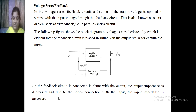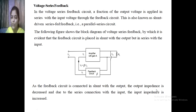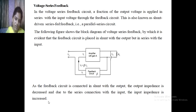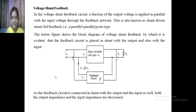This is very important: as the feedback circuit is connected in shunt with the output, the output impedance is decreased, and due to the series connection with the input, the input impedance is increased. This point is frequently asked in MCQs. Remember: shunt output decreases the output impedance, and series connection increases the input impedance.